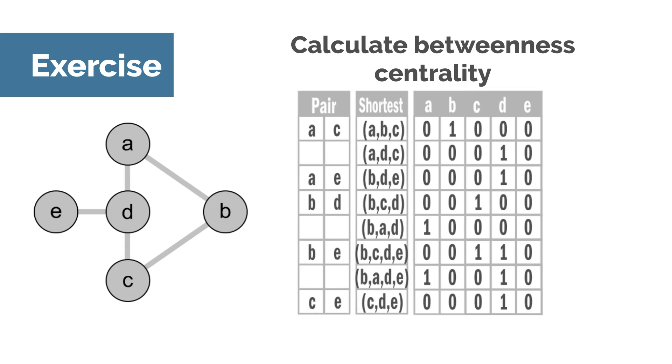Second, it is noticeable that there are two shortest paths between A and C. Betweenness centrality assumes a random probability of a path, so you have to divide by the number of possible shortest paths, in this case two.